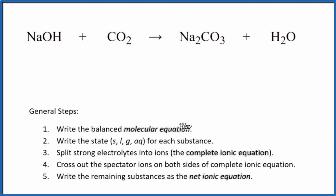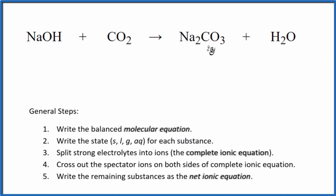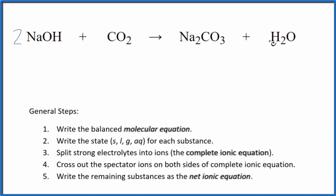First thing with net ionic equations, we balance the molecular equation. So our molecular equation — you can see right away we have two sodiums here. If I put a two here, it gives me two sodiums. Carbons are balanced. I have two plus two, four oxygens. Three plus one, four oxygens. Two hydrogens and two hydrogens. So this is the balanced molecular equation.